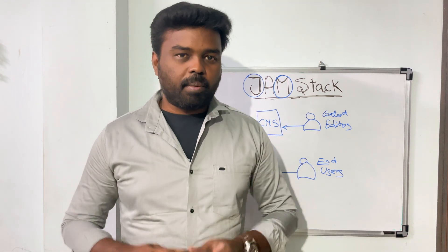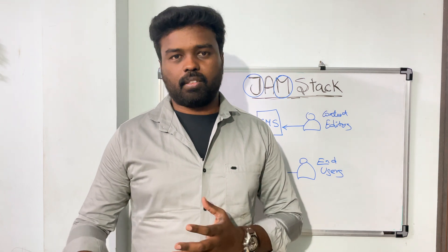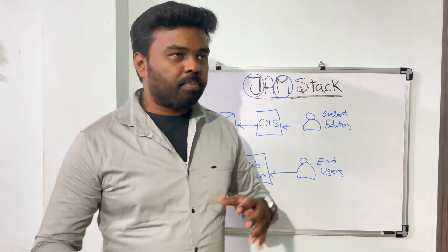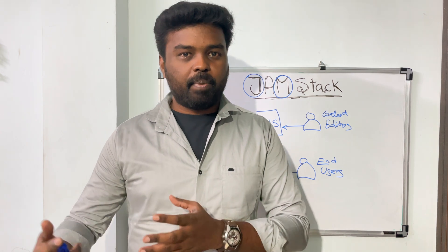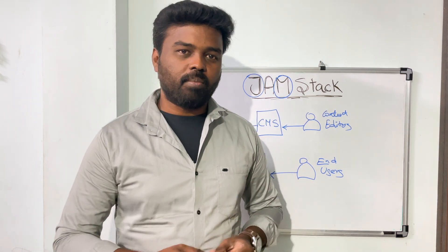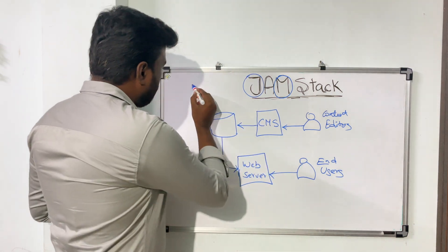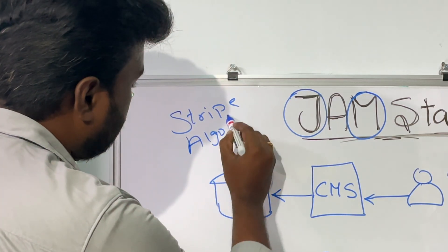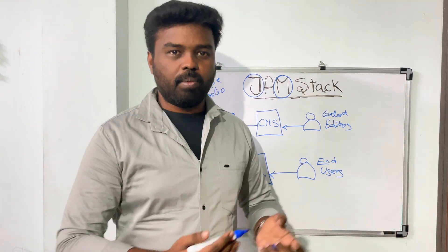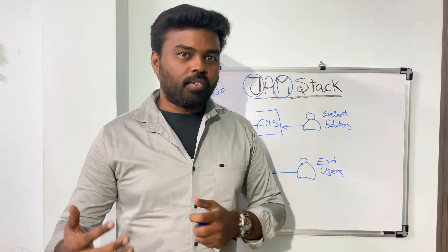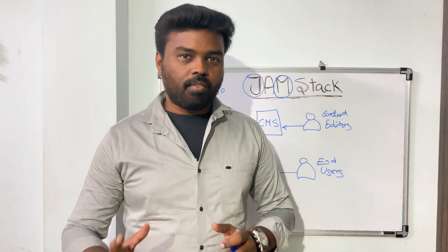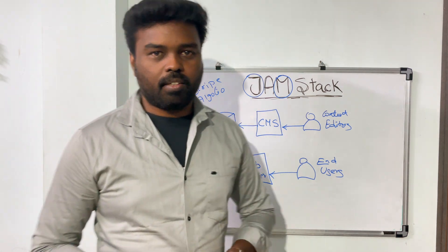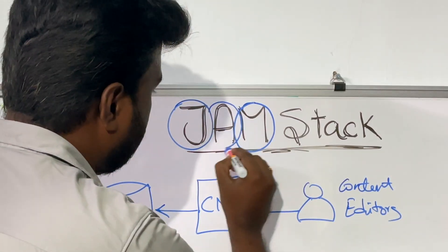Apart from these two, sometimes the application also needs server-side processing — for example, in our e-commerce website we still need to process payments. JAMstack suggests reusing APIs already available in the market. You can go for Stripe for payment processing, or Algolia for dynamic search. There are several third-party services available that you can leverage. If you still need custom server-side processing, the recommendation is to go for serverless functions or cloud functions, expose that logic as an API, and consume those APIs from the client-side JavaScript. The A in JAMstack stands for reusable APIs.